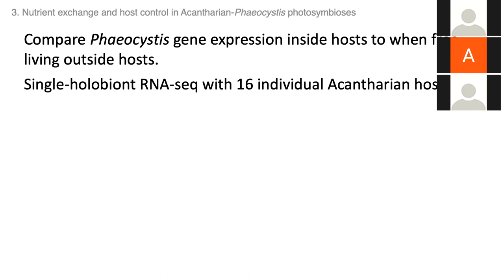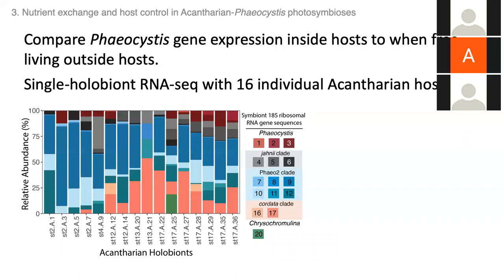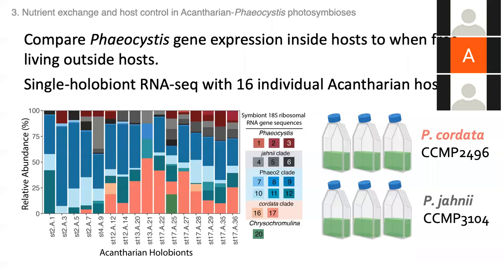To investigate this, I used RNAseq to compare gene expression within hosts to Phaeocystis gene expression when living outside hosts. I prepared RNAseq libraries from 16 individual acantharians, but a problem arose: acantharians have diverse symbiont communities, so which Phaeocystis species should I compare? Most blue sequence variants belong to the uncultured Pheo 2 clade, leaving Phaeocystis cordata and Phaeocystis jahnii as options. I prepared three cultured replicates for each species and extracted RNA following the same methods used for acantharian holobionts.